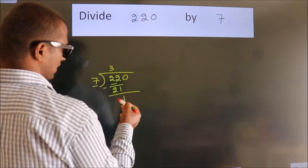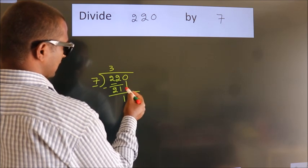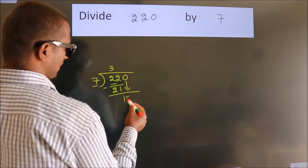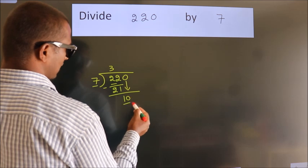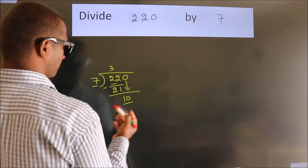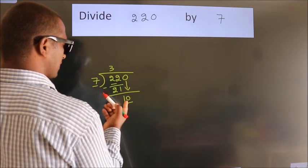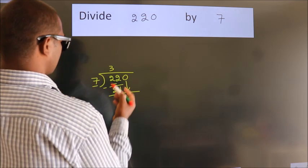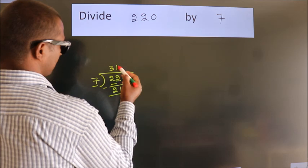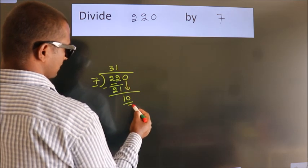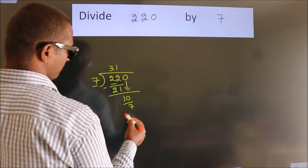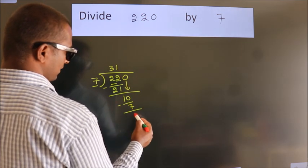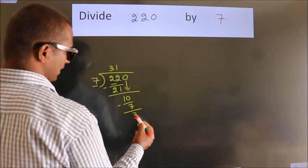After this, bring down the beside number. So 0 comes down, making 10. A number close to 10 in the 7 times table is 7 once, 7. Now we subtract and we get 3.